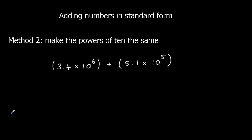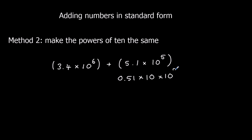The second method is to make the powers of 10 the same. We've got 3.4 times 10 to the 6, so we need the other number to also be times 10 to the 6. To add an extra 10 onto the power, we divide the coefficient by 10. So 5.1 becomes 0.51 times 10, which gives us 0.51 times 10 to the power of 6.